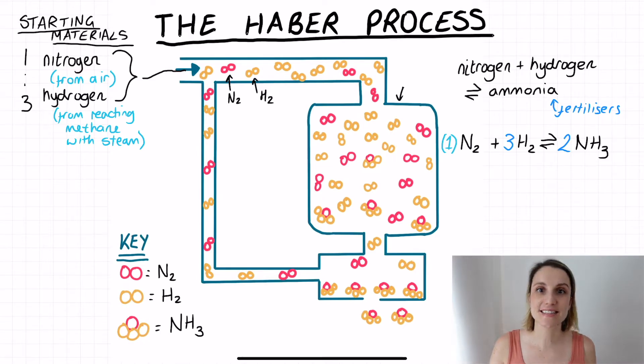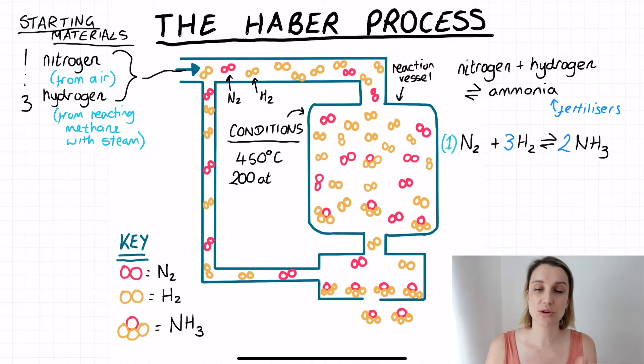We can see that our gases then move into our reaction vessel. Now this container needs some specific conditions to optimize the reaction, to make it go as fast as possible and to get the maximum yield. So the conditions that we use are 450 degrees Celsius, 200 atmospheres which is a unit of pressure, and we also need an iron catalyst in this reaction vessel. And you'll see in this reaction vessel that we've also got some production of this ammonia, the NH3, towards the bottom of it.